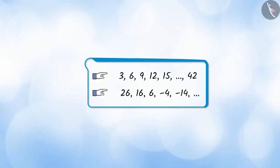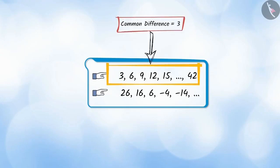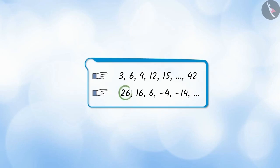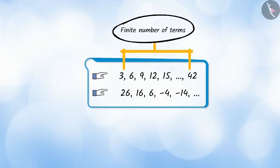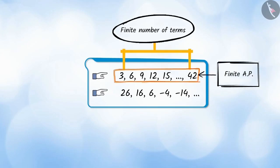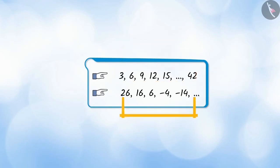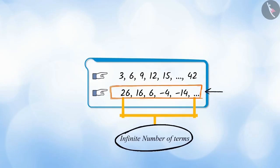We are given two categories here. The first category has a first term of 3 and a common difference of 3. The second category has a first term of 26 and a common difference of minus 10. In the first AP, the number of terms is fixed — such an AP is called a finite AP. The second AP does not have a last term, meaning the number of terms is not fixed — such an AP is called an infinite AP.